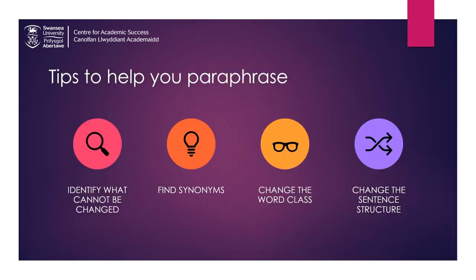Here are some tips to help you paraphrase a text. First, identify the words which can't be changed. Then, find synonyms, change the word class, and change the sentence structure. You should take all of these steps when paraphrasing, not just one. For example, if you only replace a few words in the original text with synonyms, this won't produce a paraphrased text which is notably different from the original. If there's too much similarity between your text and the original one, this will be flagged as a possible case of plagiarism.